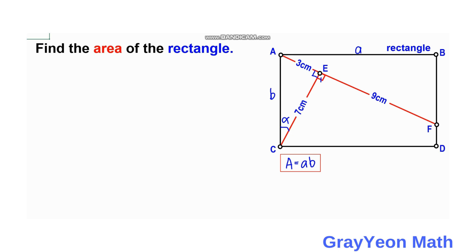Since this is a right triangle — triangle ACD — this angle should be the complement. Let's call the complement beta. So alpha plus beta equals 90 degrees.